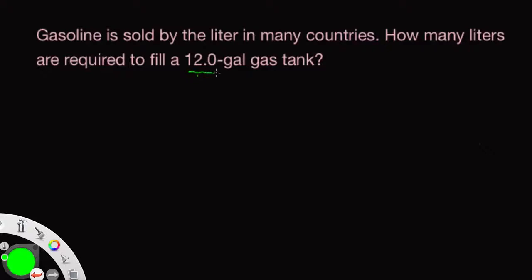The problem we're interested in is converting 12 gallons into liters. First of all, one gallon is equal to four quarts. We know this from the English system. We also know that one liter is equivalent to 1.057 quarts.